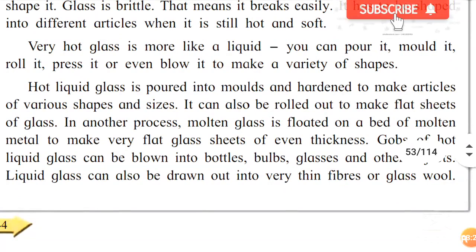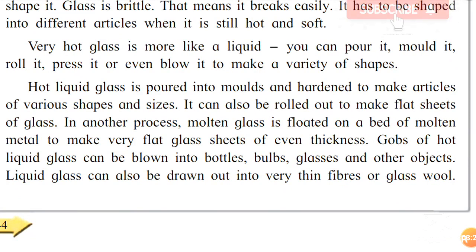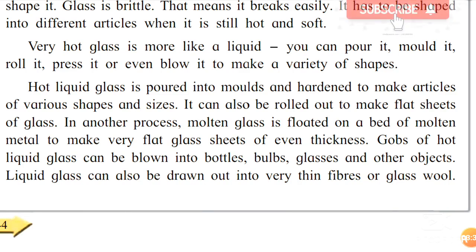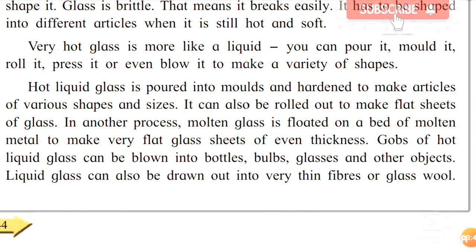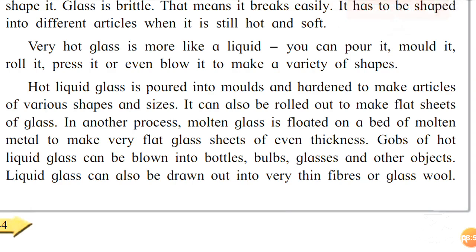Glass can also be rolled out to make flat sheets. In another process, molten glass is floated on a bed of molten metal to make very flat glass sheets of even thickness. Gobs of hot liquid glass can be blown into bottles and other objects. Liquid glass can also be drawn out into very thin fibers, or glass wool.